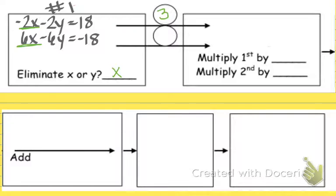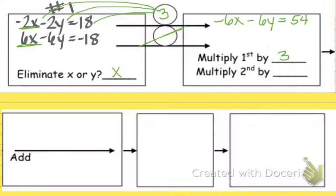Alright, so I'm going to take this 3, and I'm going to multiply it by everything in this equation right here at the top one. So I multiply the first equation by a positive 3, and I get negative 6x minus 6y equals a positive 54. And I didn't change anything in the bottom one, so it's going to be 6x minus 6y equals negative 18.